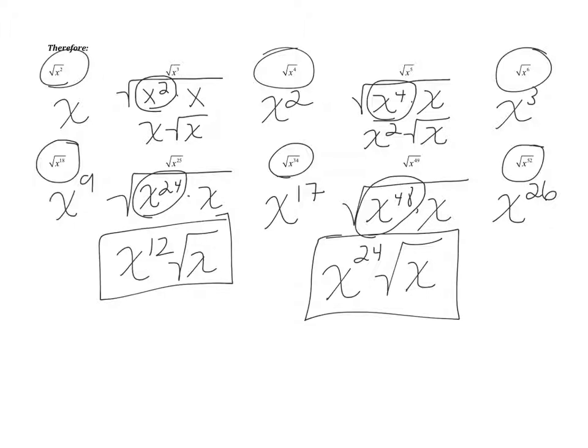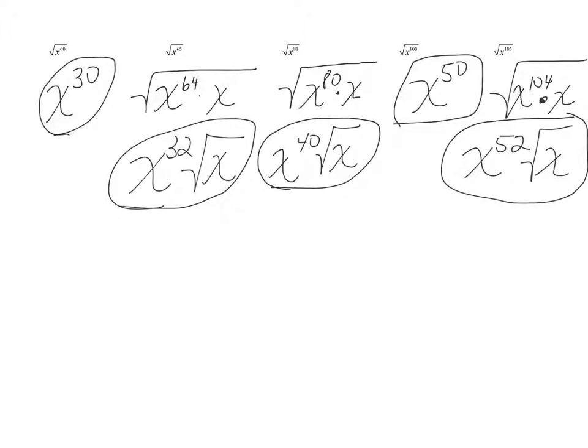So go ahead and stop the video and try the next row. As a reminder: to find the square root of a variable with an exponent, all you have to do is divide the exponent by 2. If it's not divisible by 2, take 1 away from it, leave that on the inside as your radicand, and take half of the even number before it.